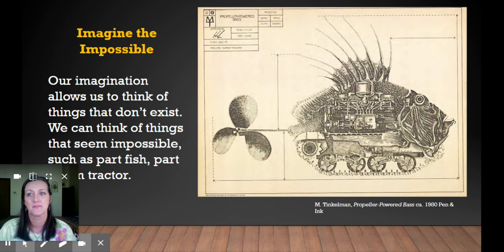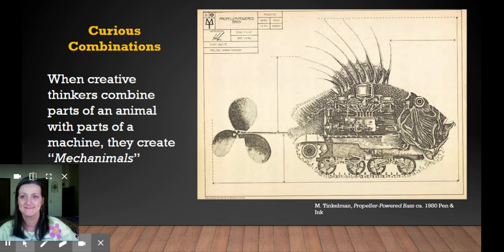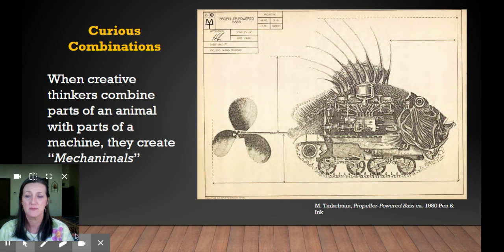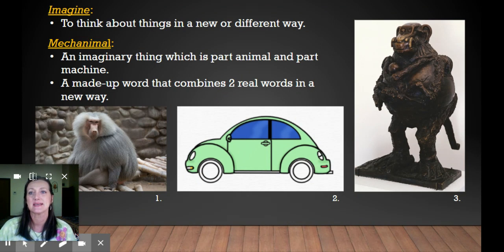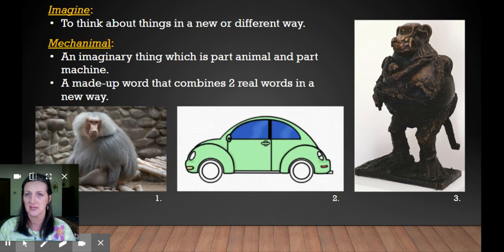Imagine the impossible. Our imagination allows us to think of things that don't exist. We can think of things that seem impossible, such as part fish and part tractor. Curious combinations: when creative thinkers combine parts of an animal with parts of a machine, they create mechanimals. To imagine means to think about things in a new or different way. A mechanimal is an imaginary thing which is part animal and part machine — a made-up word that combines two real words in a new way.